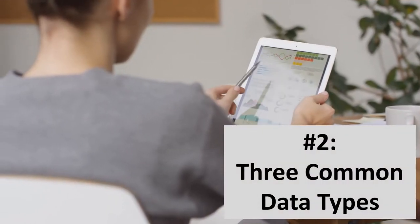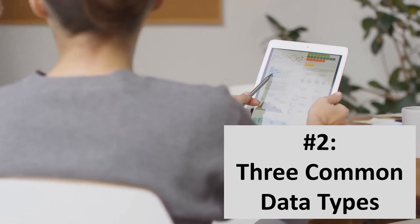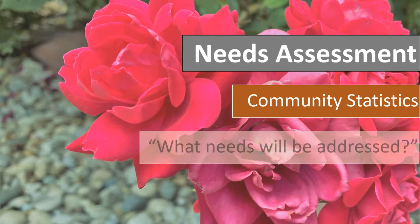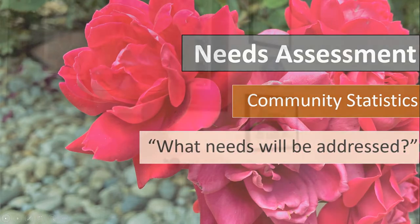Number two: let's go from why to what — the three types of data most often requested in grant proposals. First, needs assessments. The grant funder wants to know what you know about the community you serve. The question is often asked in a proposal like this: what needs will be addressed? To provide a complete answer, you have at your disposal lots of regional authorities that publish reports about many issues in a community. I'll name several of these here, and they are also listed and linked in the description below — all free.